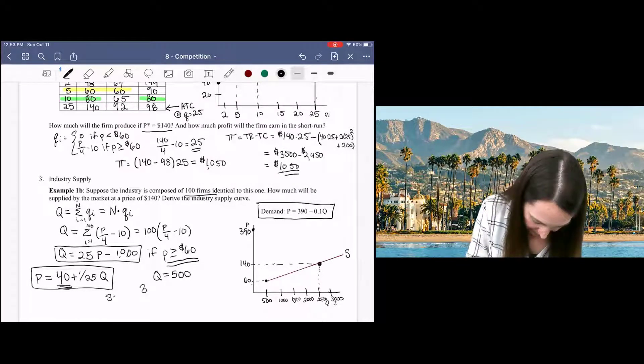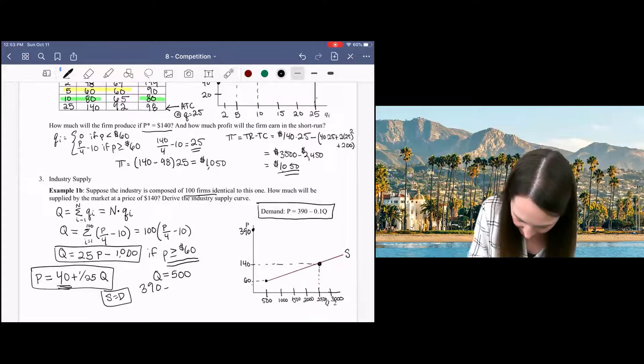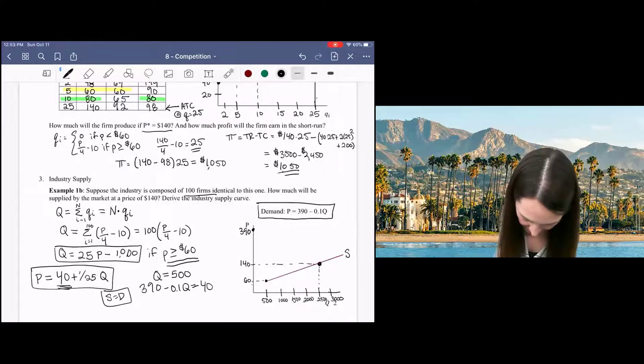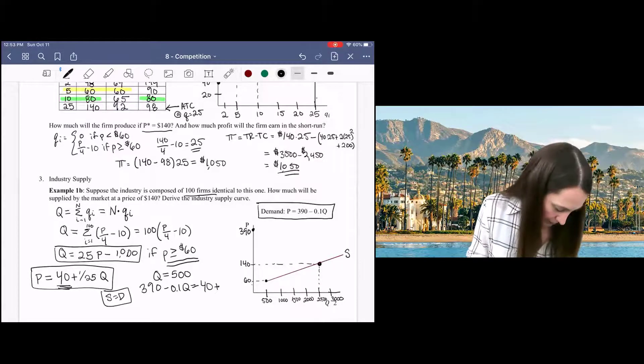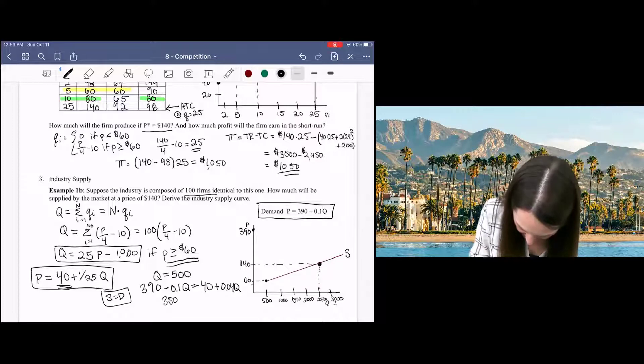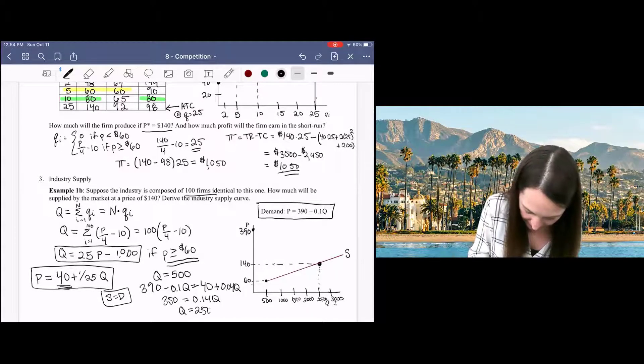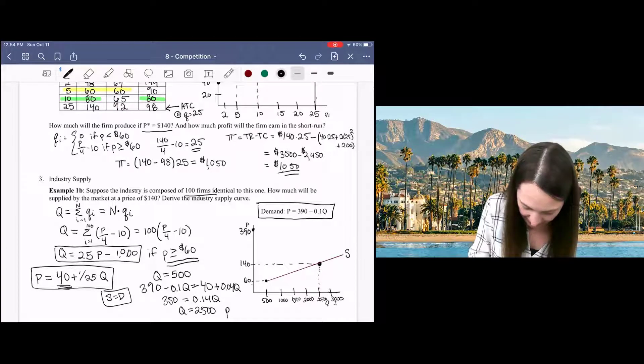So if I want to set supply equal to demand here, I would get 390 minus 0.1Q equals 40 plus 0.04Q. That's 1/25th. And then I get 350 equals 0.14Q. And then I solve for Q and I get 2,500. I plug that 2,500 back in and I get a price of 140.